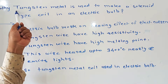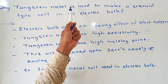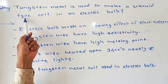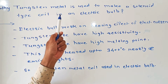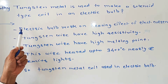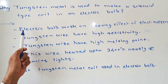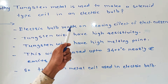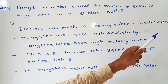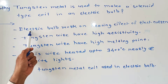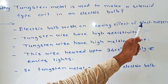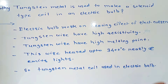Let's see the point. Why tungsten metal is used to make a solenoid type coil in an electric bulb? The first point is: Electric bulb works on the heating effect of electric current.